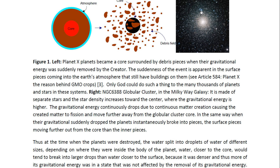Here you see a globular cluster in the Milky Way galaxy. It is made of separate stars and the star density increases towards the center. Where the gravitational energy is higher, the gravitational energy continuously drops due to continuous matter creation, which then causes the created matter to fission. As the gravitational energy drops, they tend to fission into smaller and smaller pieces, so the globular cluster turns into millions or billions of stars. In the same way, when these objects' gravitational energy suddenly dropped, the planets instantaneously broke into smaller pieces.